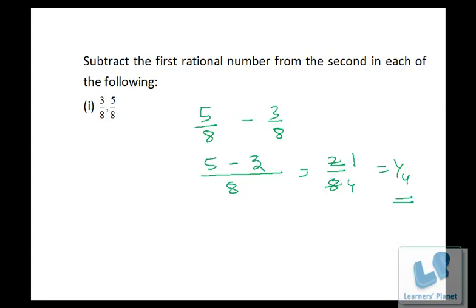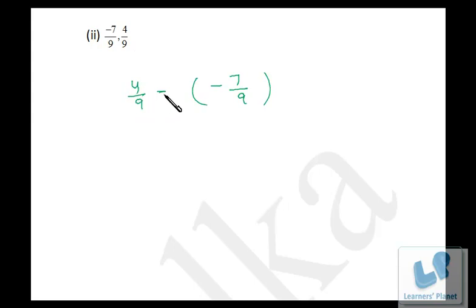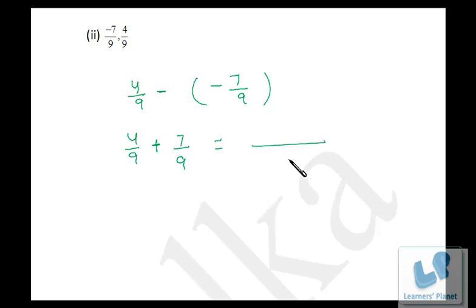Let's take the next one. We have to subtract 4/9 minus this. We have to subtract the first number from the second number. So it's 4/9 minus, and minus multiplied with minus gives a positive sign — it's 7/9. Nine is the LCM. Four plus seven is eleven, so if you subtract minus 7/9 from 4/9, we get 11/9.